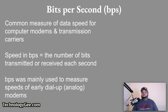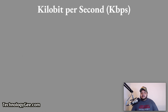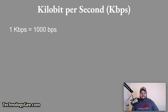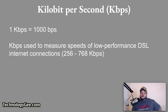One kilobit per second equals 1,000 bits per second. Kilobits per second is primarily used to measure the speeds of low-performance DSL internet connections, ranging from 256 to 768 kilobits per second.